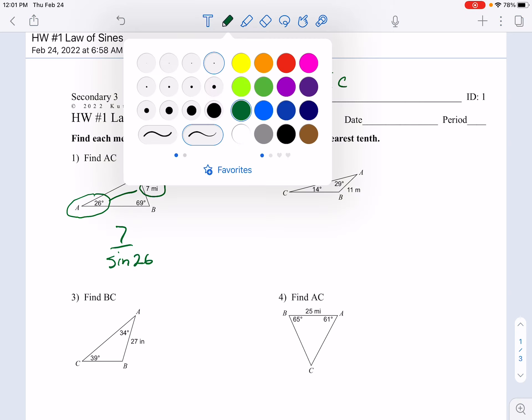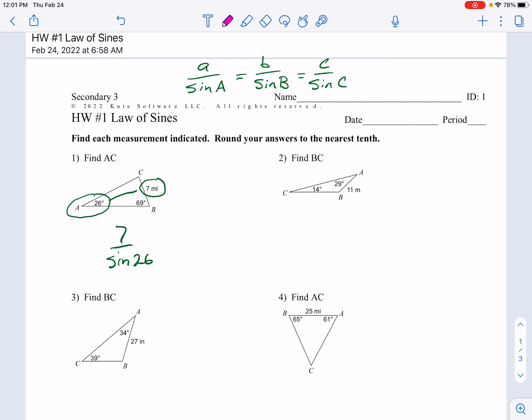On question number one, we're asked to find segment AC, which is actually asking us to find little b. Little b is across from the angle 69. The two fractions form a proportion, which means they're equal.